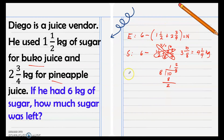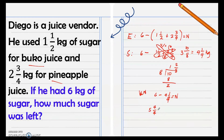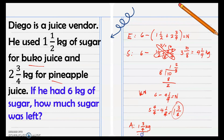Now we subtract from six: six minus four and one-fourth. We regroup six as five and four over four, so it's easier to subtract. Five and four-fourths minus four and one-fourth: four minus one is three, copy the denominator, and five minus four is one. The answer: one and three-fourths kilograms of sugar was left.